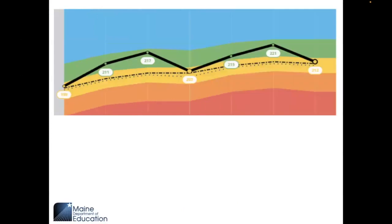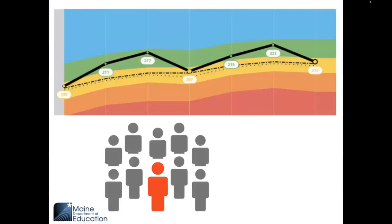RIT scores are nationally normed scores that can be used across multiple assessment administrations to measure longitudinal growth, as well as to compare a student's growth and performance to their same-grade peers across the United States.